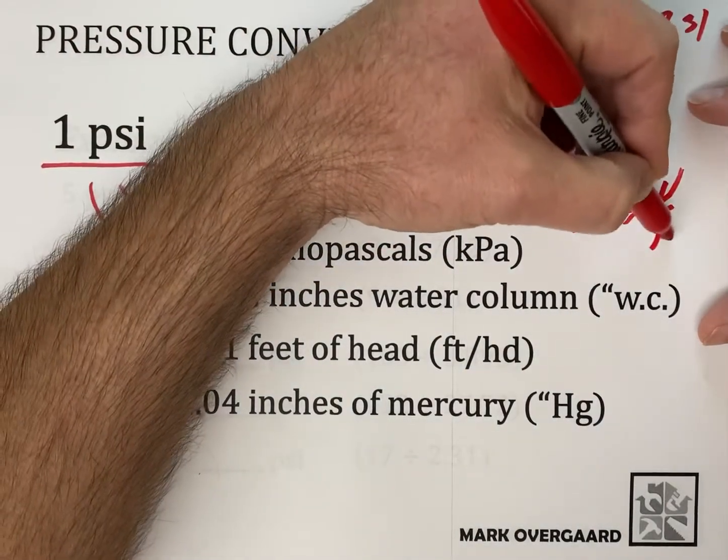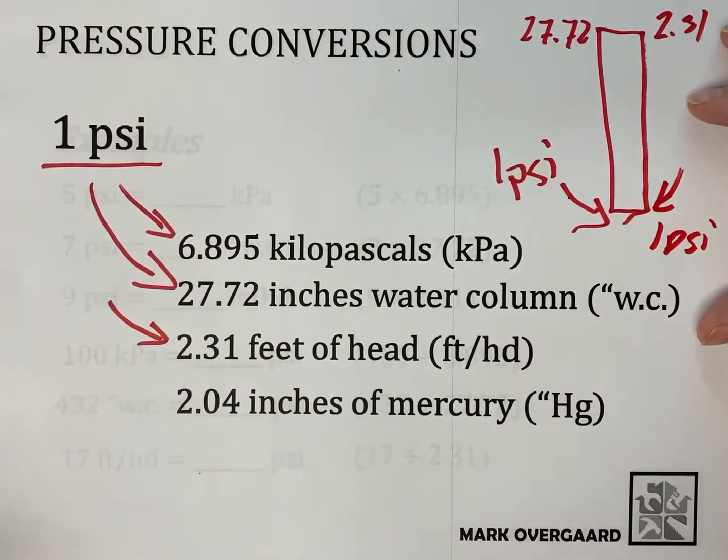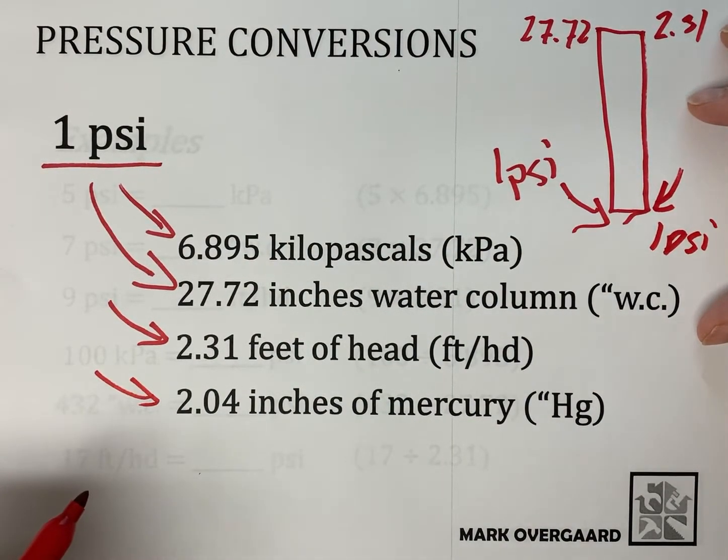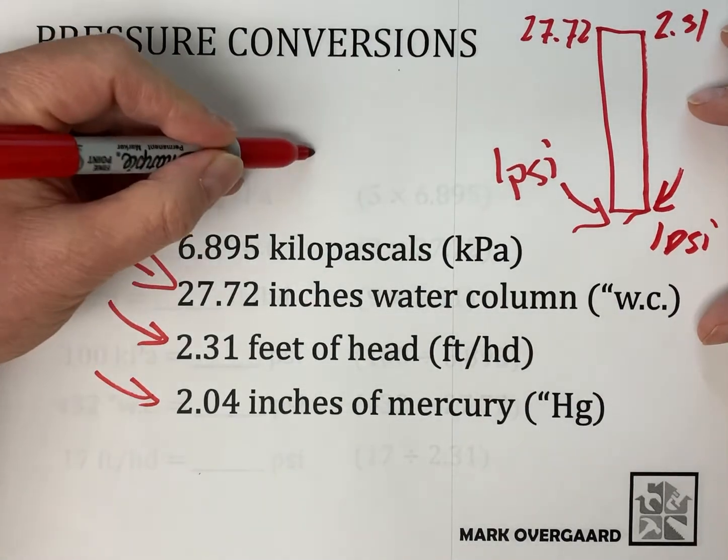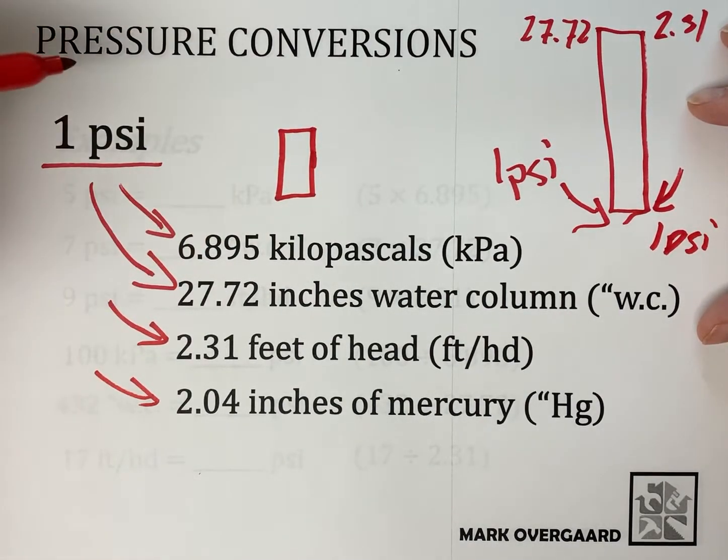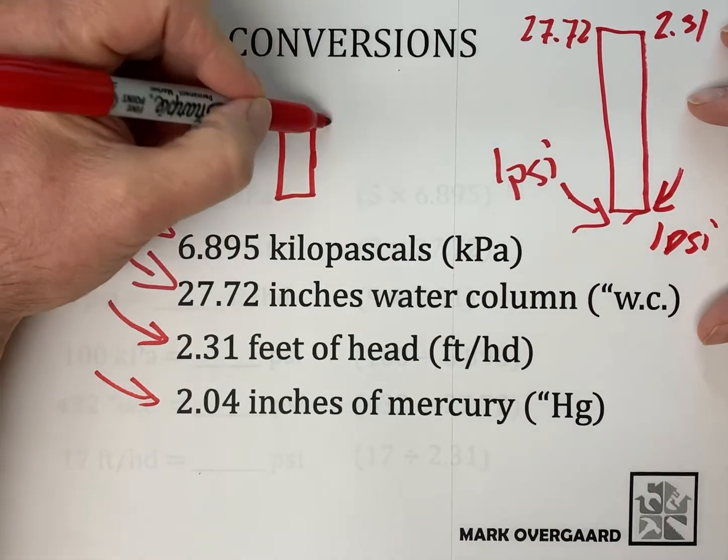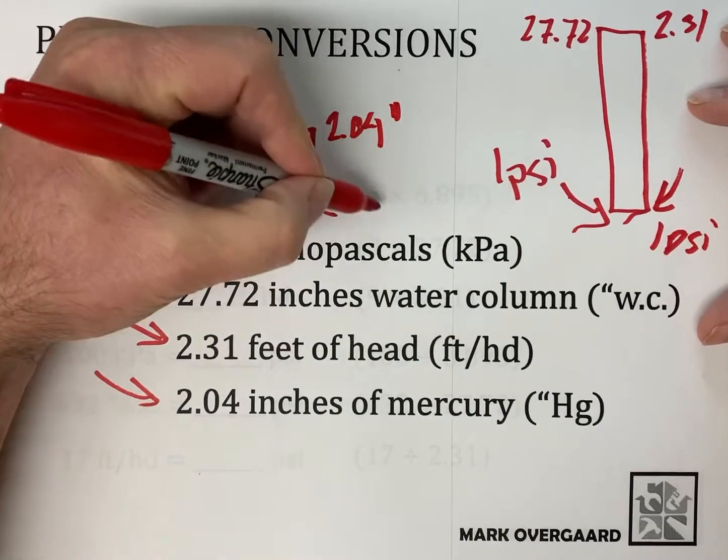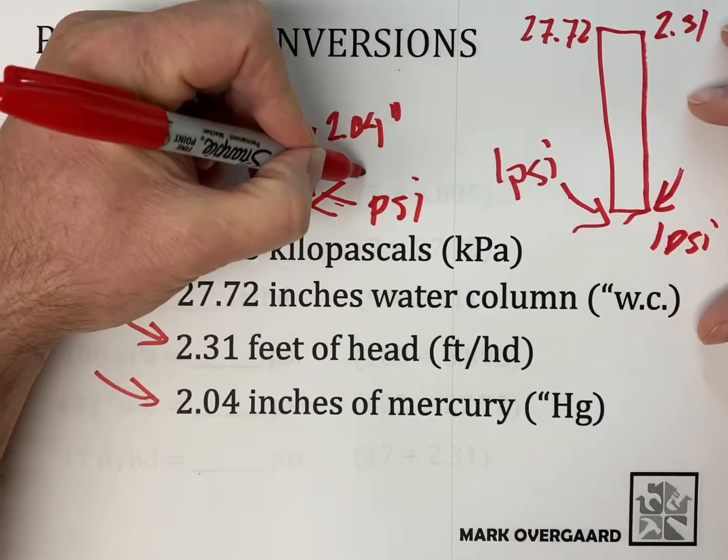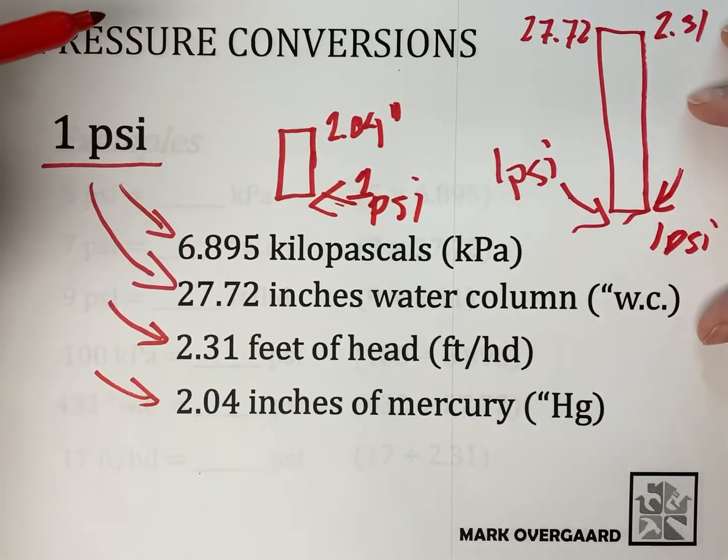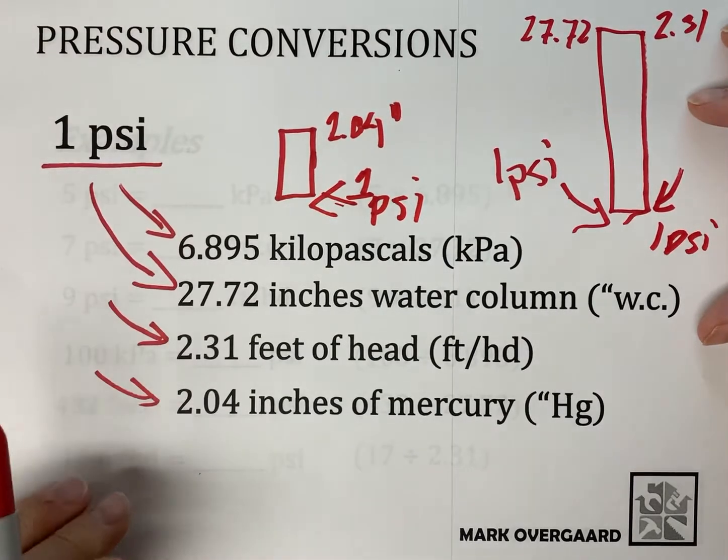Now, as it turns out, 27.72 inches is 2.31 feet. Yeah, there you go, look at that. 2.31 feet. You fill that with water, fill it up 2.31 feet with water, what you get down here? One PSI. Same concept. Now there you go, 2.04 inches of mercury. So if we took a column of mercury and we filled that up with mercury 2.04 inches high, what we'd be getting down here is once again one PSI. Mercury is a little more dense, a little heavier than water. So there's our starting point.